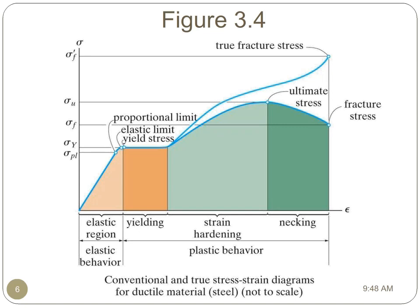After this point, we have the phenomenon called necking, where a portion of the material will experience a decrease in cross-sectional area, increasing the stress in the member, but decreasing the amount of load it can support, until it ultimately reaches the failure stress where the member will break. This diagram is not to scale, and not all materials will experience all of the regions described in this diagram.